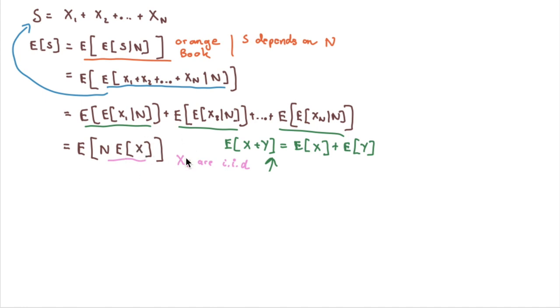Big thing to understand here though, is our expected value of the X's is now a constant. Okay, that is now a constant. And the N is the random variable. So because of that, we can now take the expected value of X out.